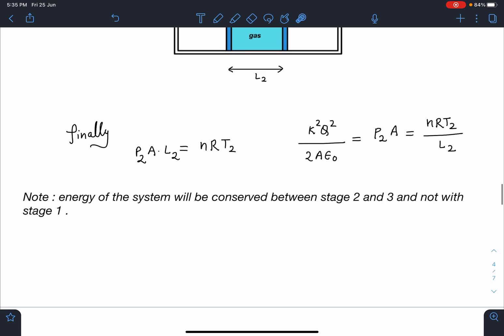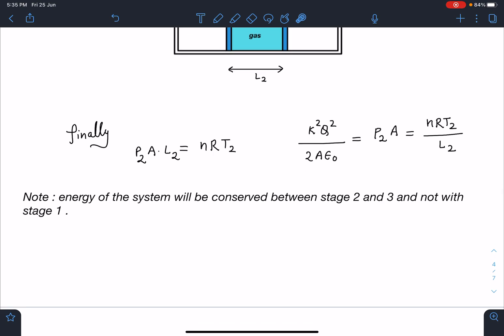So that's what I have written here: energy of the system will be conserved between Stage 2 and 3 and not with Stage 1. That is what the normally mistake will be done by the students, they will apply directly between Stage 1 and Stage 3.